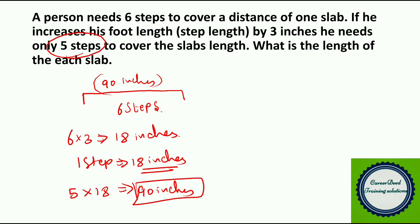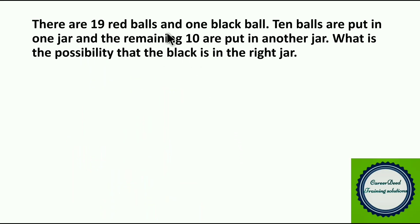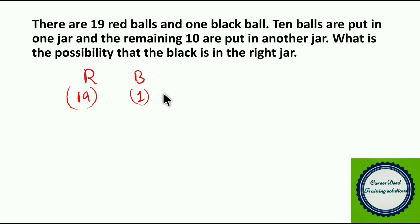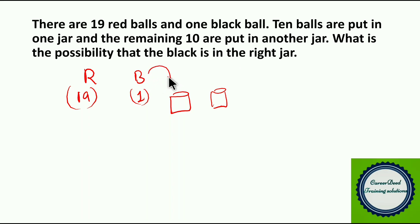Moving to question number 19. There are 19 red balls and 1 black ball. 10 balls are put in one jar and the remaining 10 in another jar. What is the probability that the black ball is in the right jar? Since there are only 2 jars, the black ball has an equal chance of being in either jar. So the probability is 1/2.